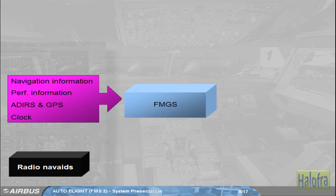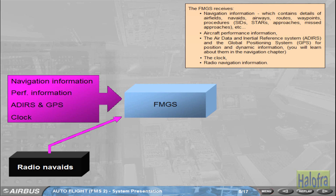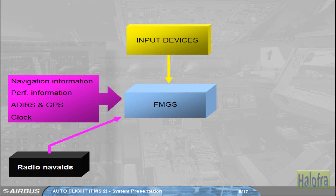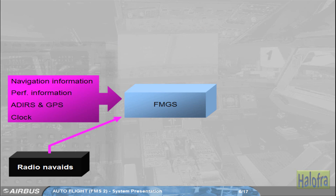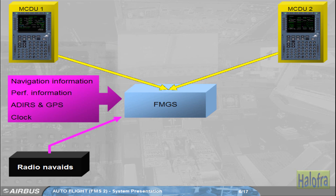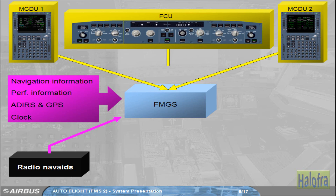The FMGS also receives data from the clock and radio navigation information. The pilots provide inputs to the FMGS using two multi-purpose control and display units, MCDU, for long-term interventions, and a single flight control unit, FCU, for short-term interventions.